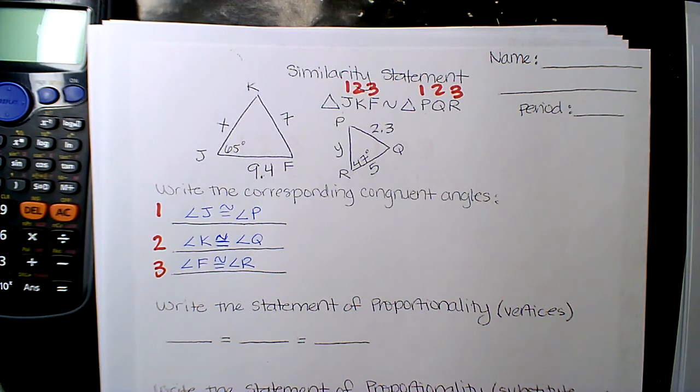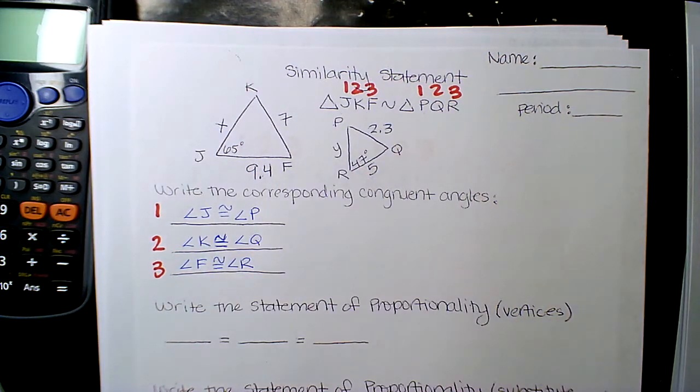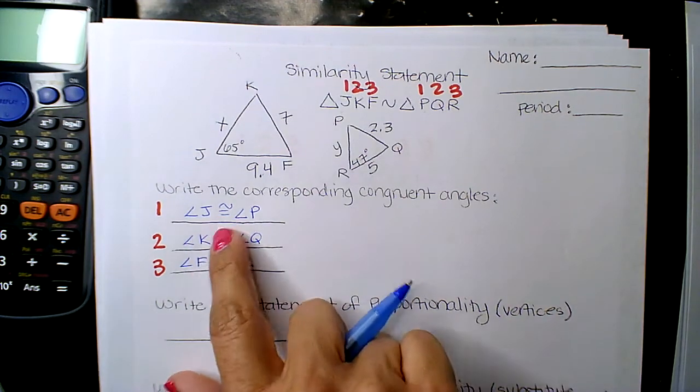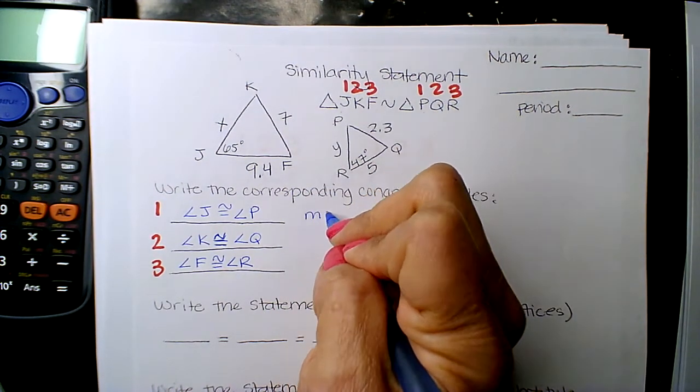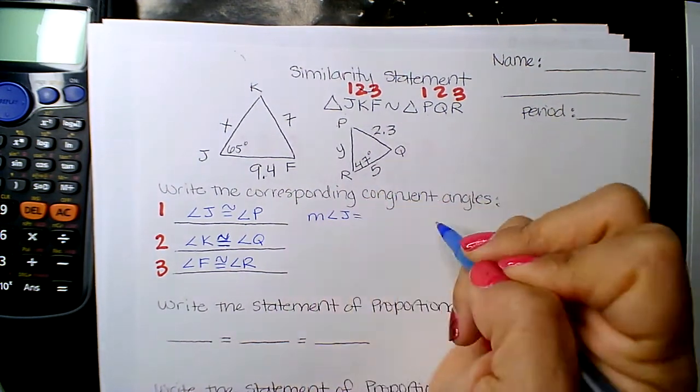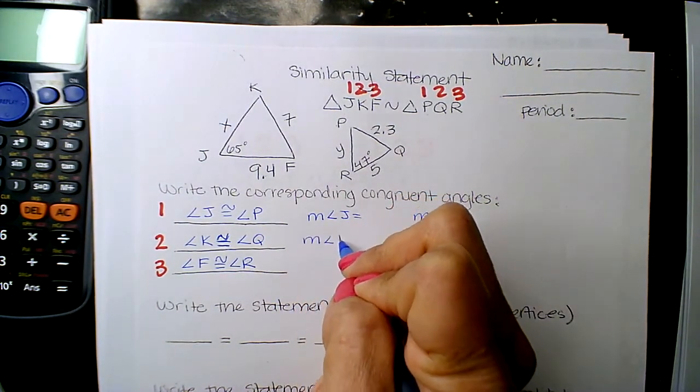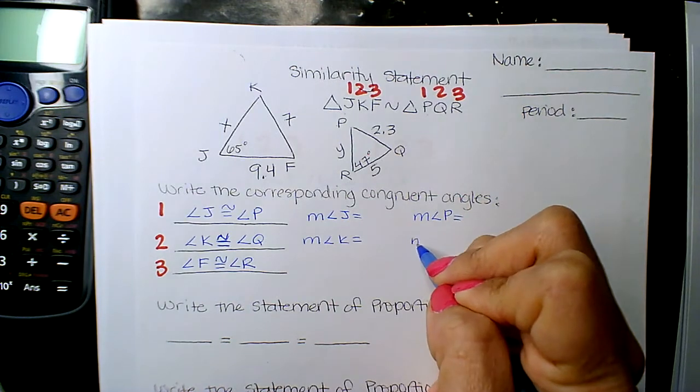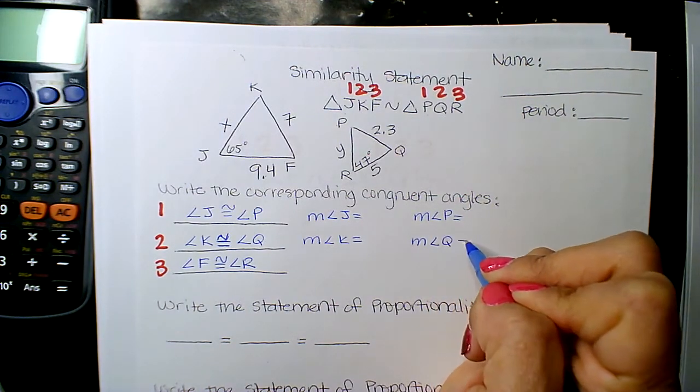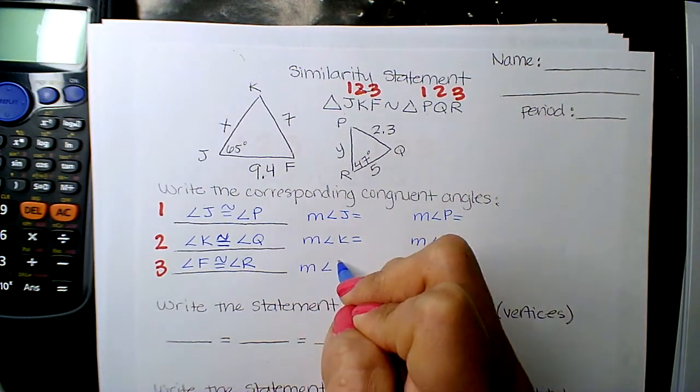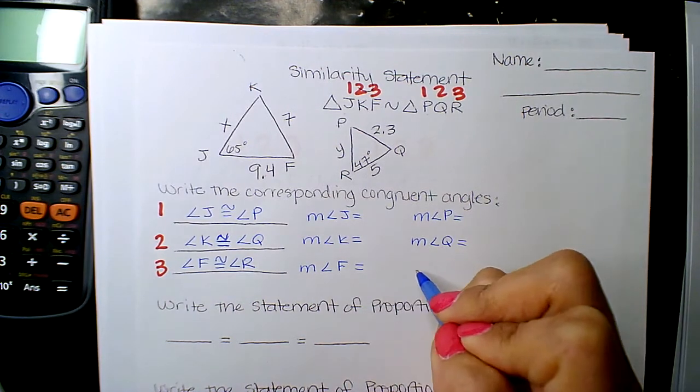Okay, so now I want you guys to tell me the measure of the angles. So, you're going to have to look here and see what they're giving you. Okay, so I want all of these. So, I'm just going to set it up. And M means measure of, right? Measure of angle F or K or J.